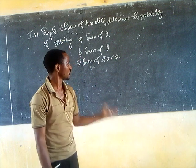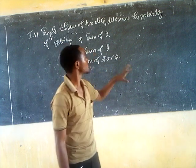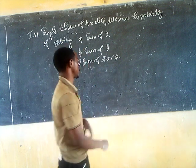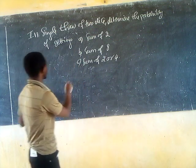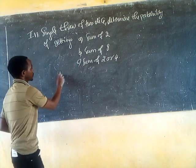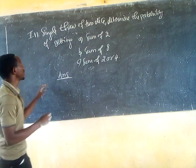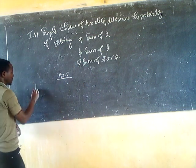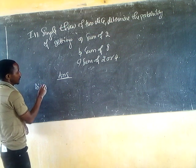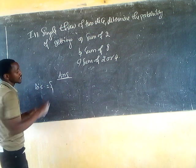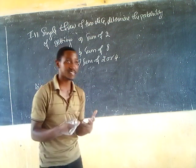So, this is a good question. How to solve that question? Each die has six sides.